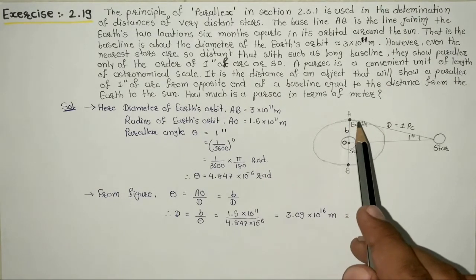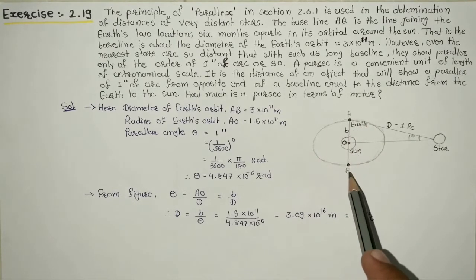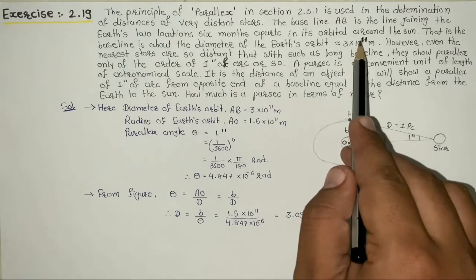Here we have the baseline AB. This orbit's radius given, which is 3 times 10 to the power 11 meters.